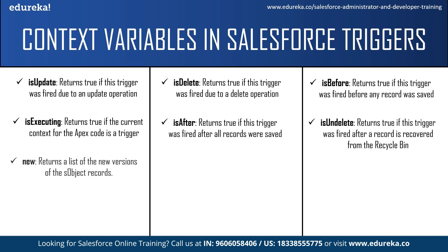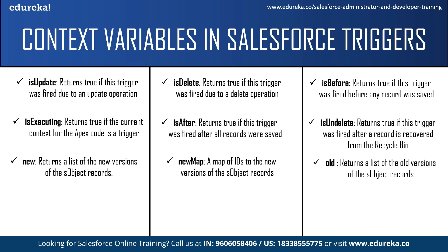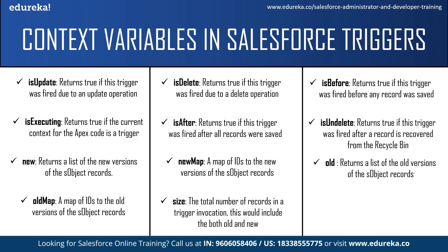The 'new' context variable returns a list of new versions of the Salesforce object records — only available in insert, update, and undelete triggers, and records can only be modified in before triggers. 'newMap' is a map of IDs to the new version of Salesforce object records, available in before update, after insert, after update, and after undelete triggers. 'old' returns a list of old versions of Salesforce object records, available in update and delete triggers. 'oldMap' is a map of IDs to old versions, also available in update and delete triggers. Finally, 'size' returns the total number of records in a trigger invocation, including both old and new.